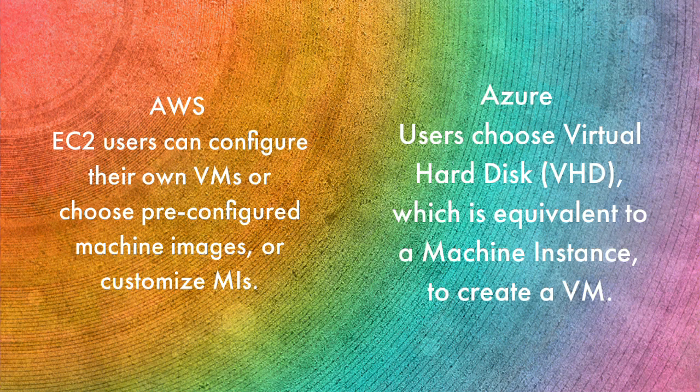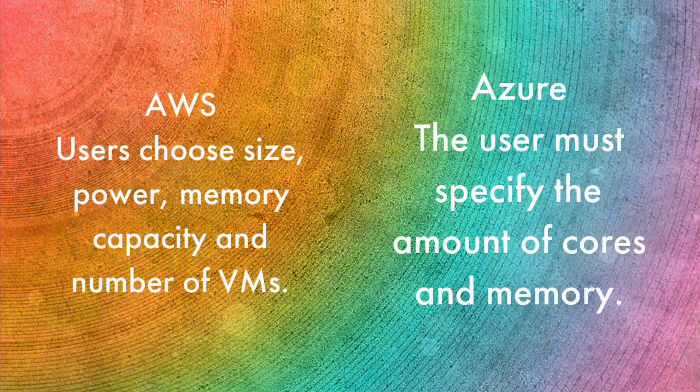Azure users can choose a virtual hard disk, which is equivalent to a machine instance, to create a virtual machine. An AWS user can choose the size of the instance, the power consumption by the instance, the memory capacity of the instance, as well as the number of virtual machines they want to deploy in the Amazon Web Services Cloud.